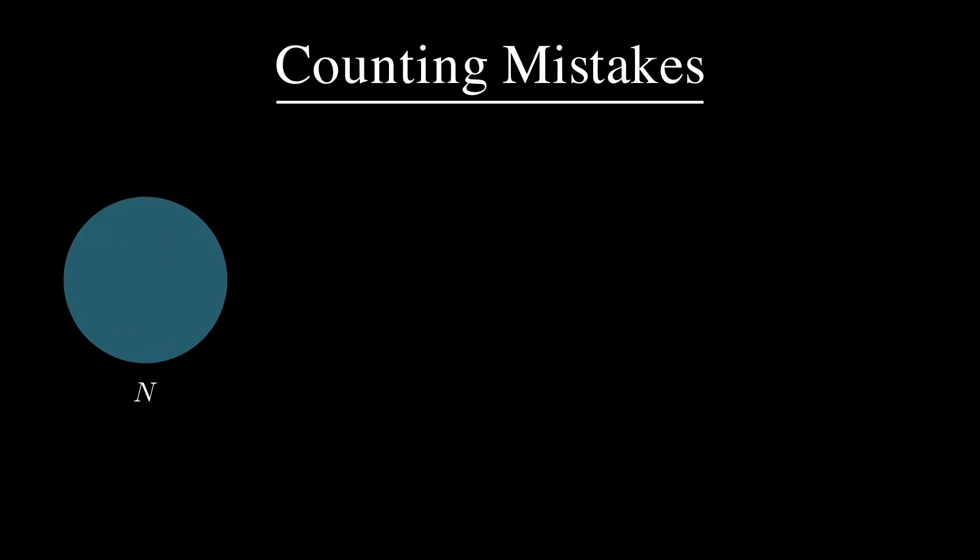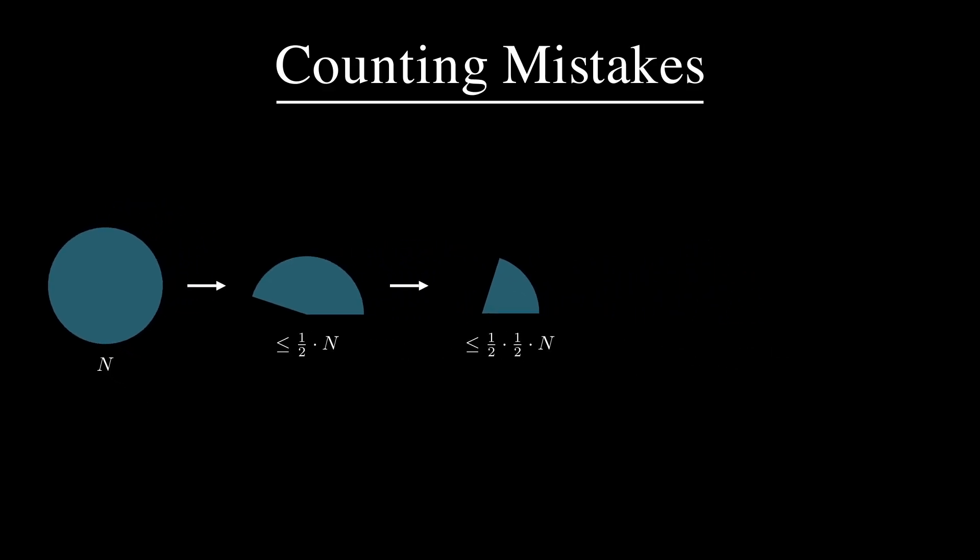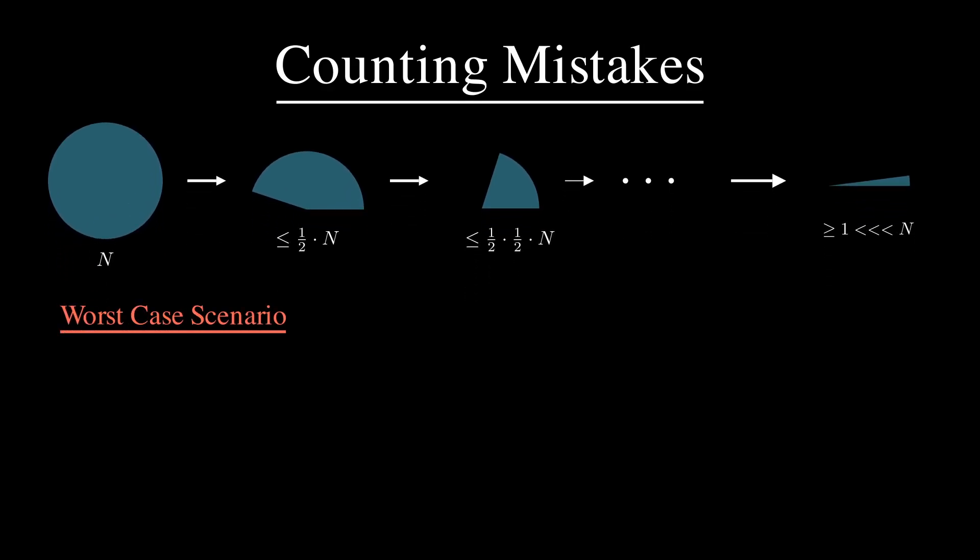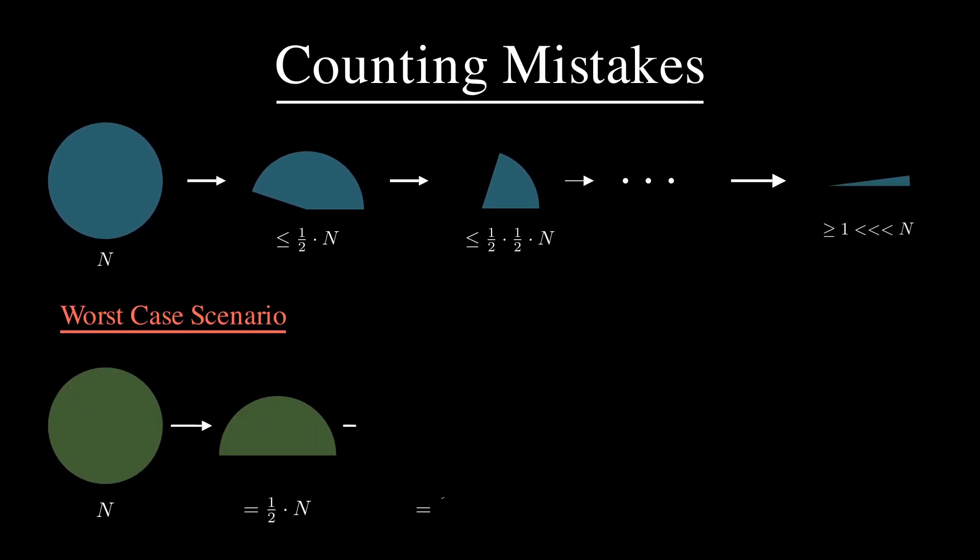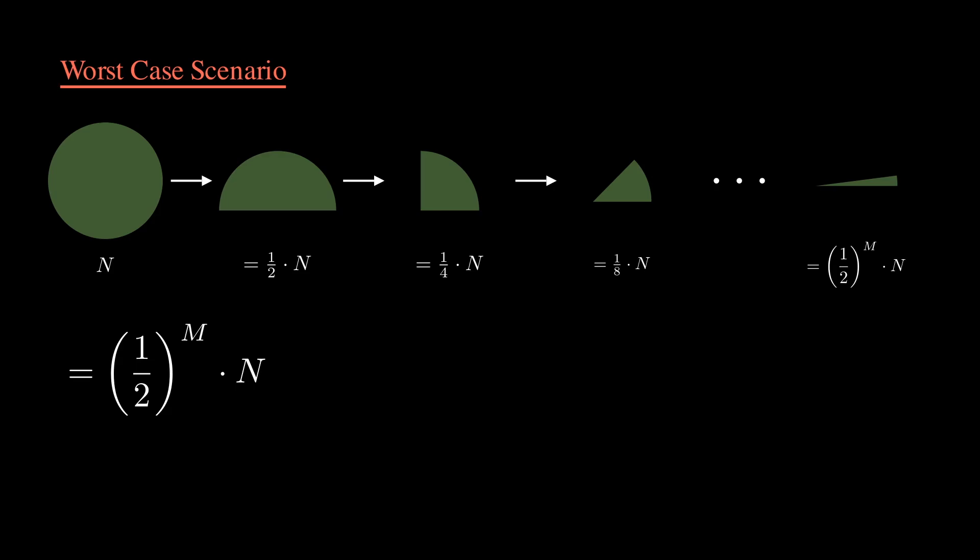But how good are the predictions we make? We want to determine the maximum number of mistakes that we can make by following this policy. In other words, how many times can we remove at least half of the experts until we are left with only one expert, the always correct expert? We can compute this upper bound by removing exactly half of the experts at each step. This case is logarithmic, so we make at most log n mistakes, where n is the number of experts we have initially.